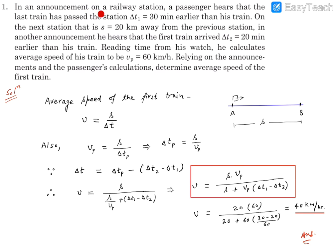In an announcement on a railway station, a passenger hears that the last train has passed the station Delta T1, that is 30 minutes earlier than his train.